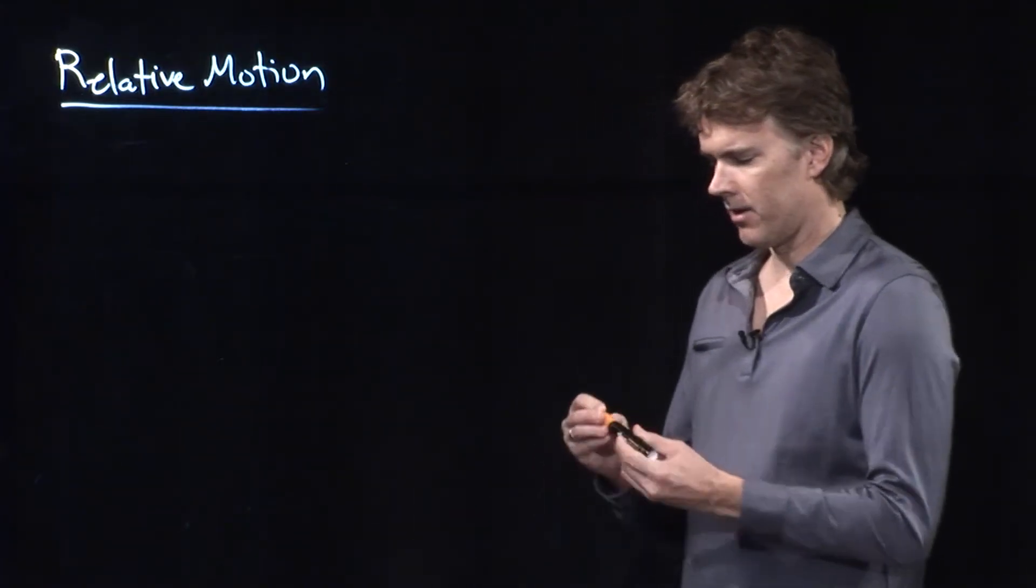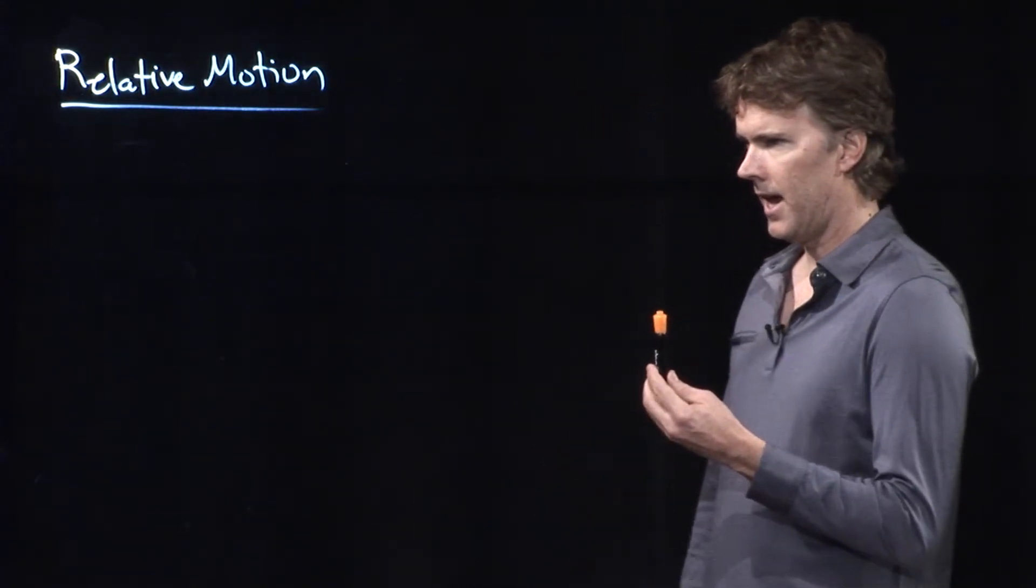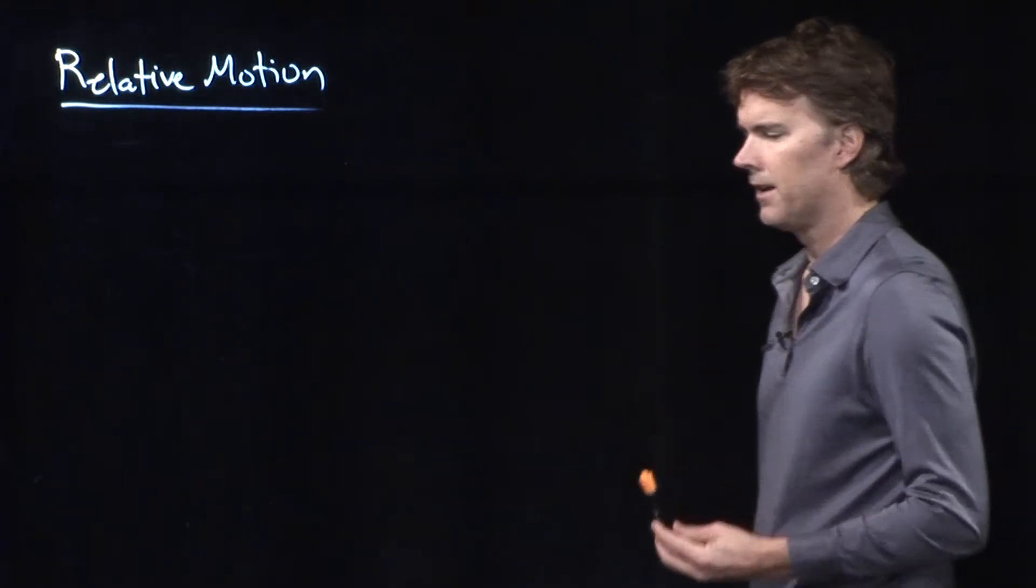Let's say we do the following experiment. I have a pen in my hand here, and as I walk across the screen and I toss that pen straight up and down, what do you guys see in the audience? Somebody have a thought? What do you think? What's the curve that you observe?